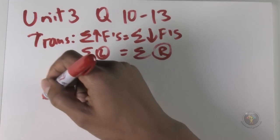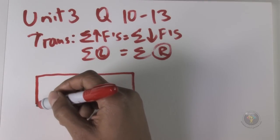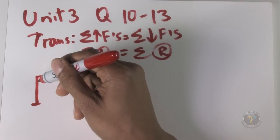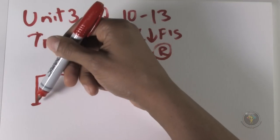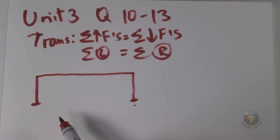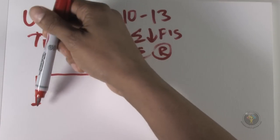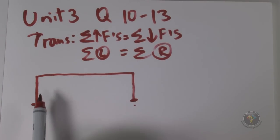The setup looks like this: the bed has legs that apply force to the ground. The ground pushes back up — that's Newton's third law, action and reaction. Every force has an equal and opposite force. The force the ground exerts upward is called the ground reaction force, acting opposite to the downward force.